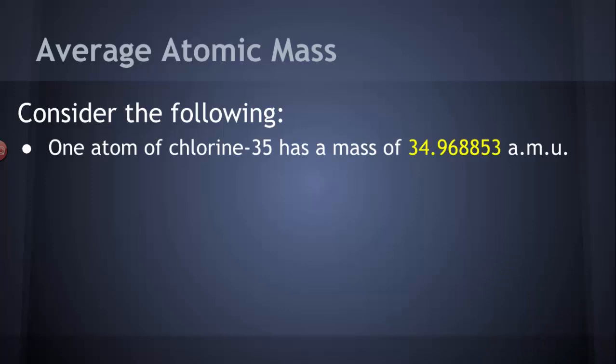I want you to consider the following information. One atom of chlorine-35, that's the one that has 17 protons and 18 neutrons, one atom of that has a mass of 34.968853 atomic mass units. 35 total particles in the nucleus, mass of almost 35 AMU.